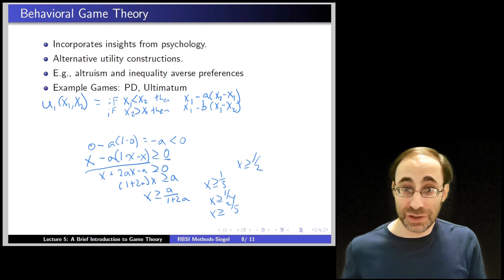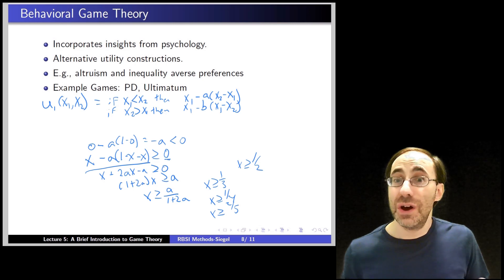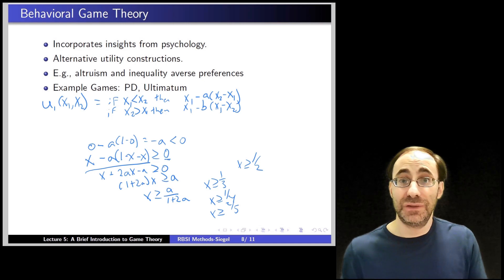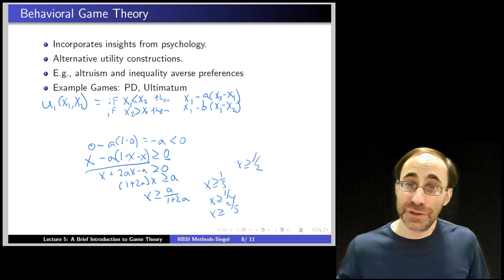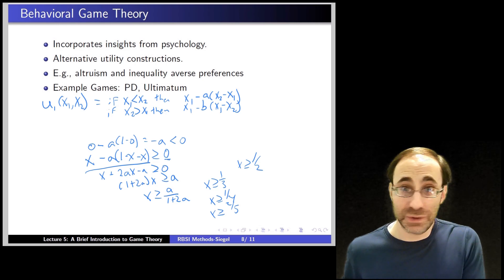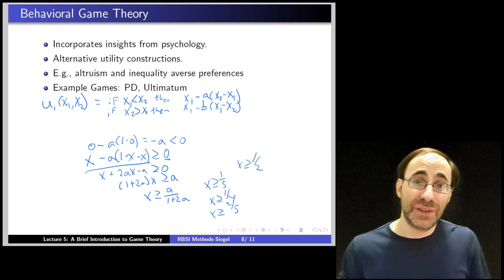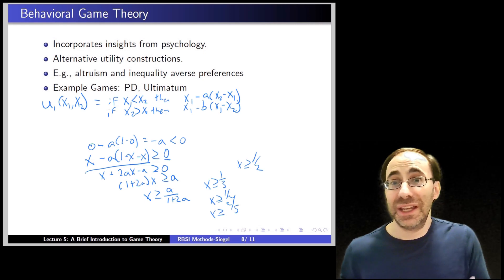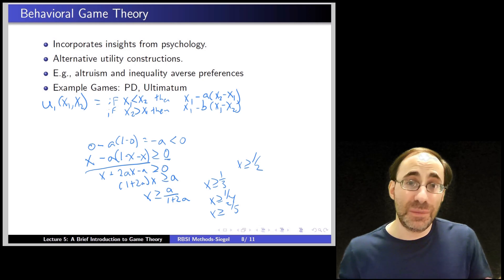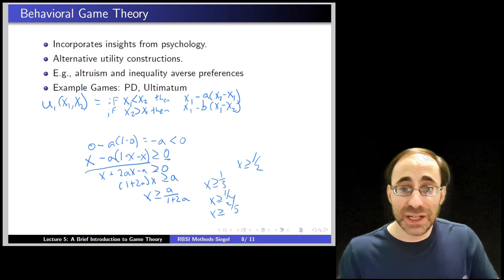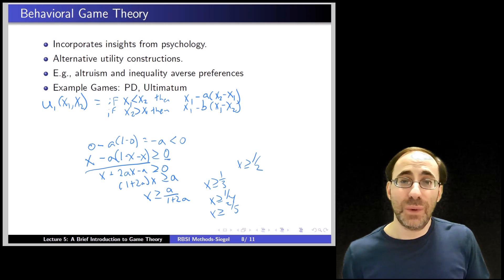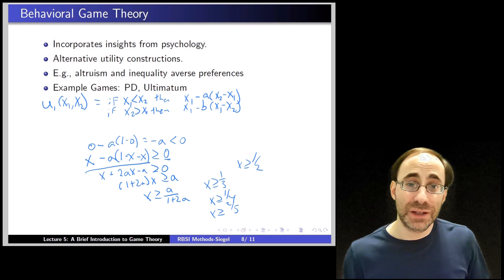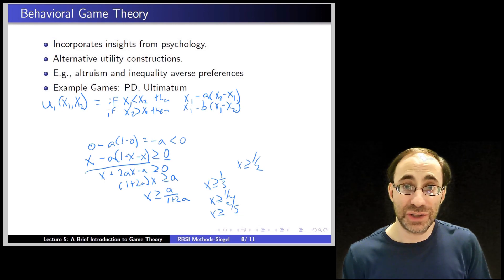In this case, inequality-averse preferences get you the result that individuals will say no to low offers, and that compels the perfectly rational first player to look ahead in the game tree, do backward induction, realize that the second player is going to perfectly rationally say no because they have inequality-averse preferences, which are totally allowed in rational choice, and then because of that, the first player will offer them more to make sure they say yes to the offer. So there's a ton more in behavioral game theory, and much of what we're going to do going on is to think about different examples in which there might be an interesting approach by incorporating different kinds of psychological insights into our utility function construction. Thank you very much.